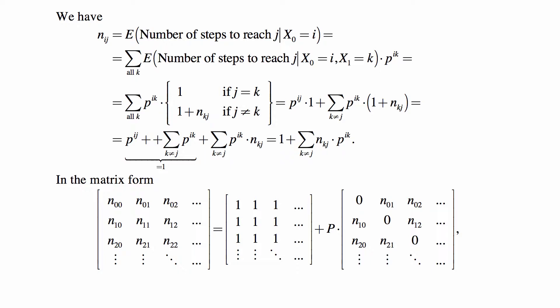Then we can write it as summation over all k, using basically the law of total probability, as the expected number of steps to reach j, given that x₀ is i and x₁ is k, times pik, the probability of transition from i to k. And then that's the sum of those pik multiplied by: one if j equals k, because if j equals k, then the number of steps is one, we just reached what we wanted. Or, one plus Nkj if j is not equal to k, because then we can use the knowledge about the expected number of steps to go from k to j, given that we are in k after step one. And we take the summation over all k.